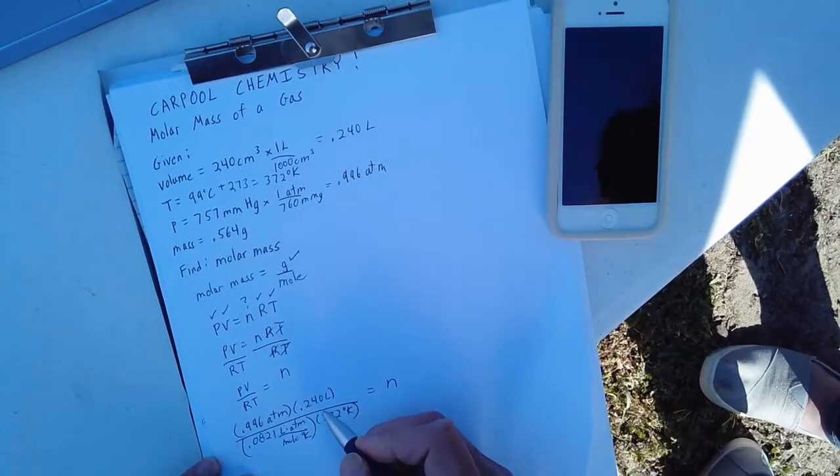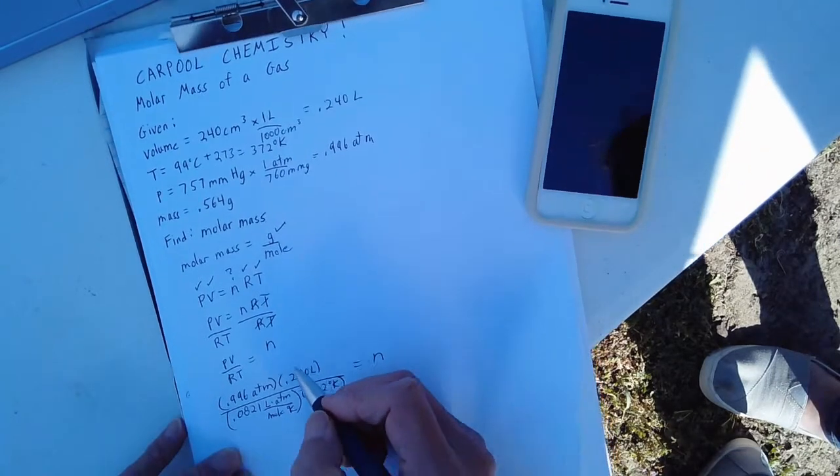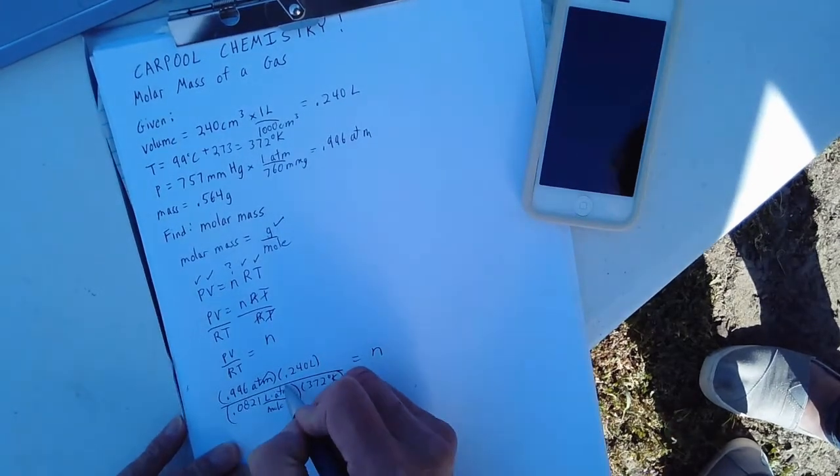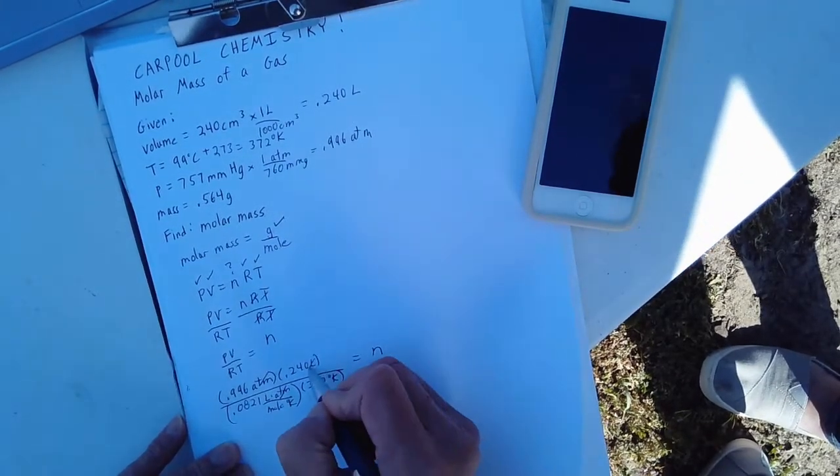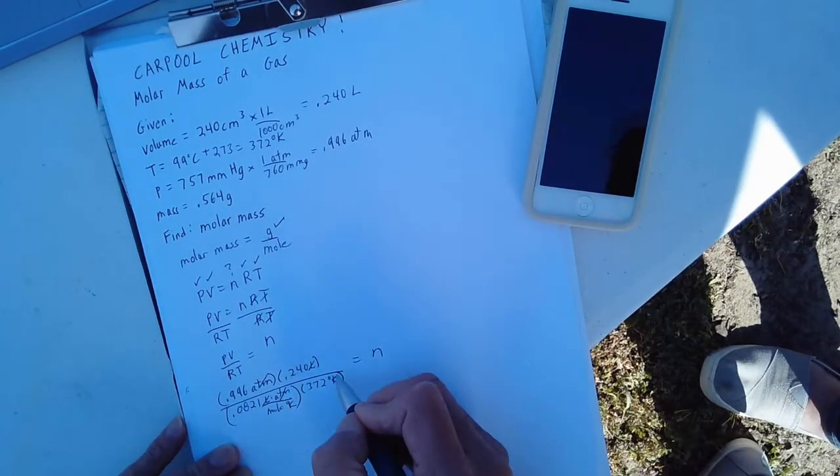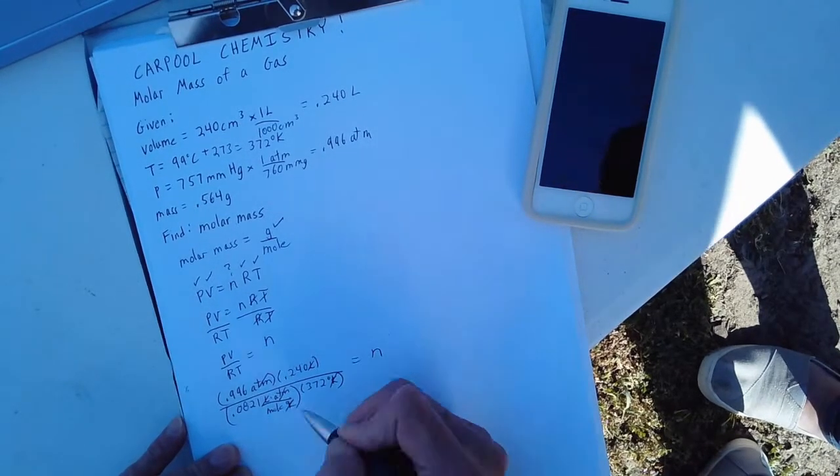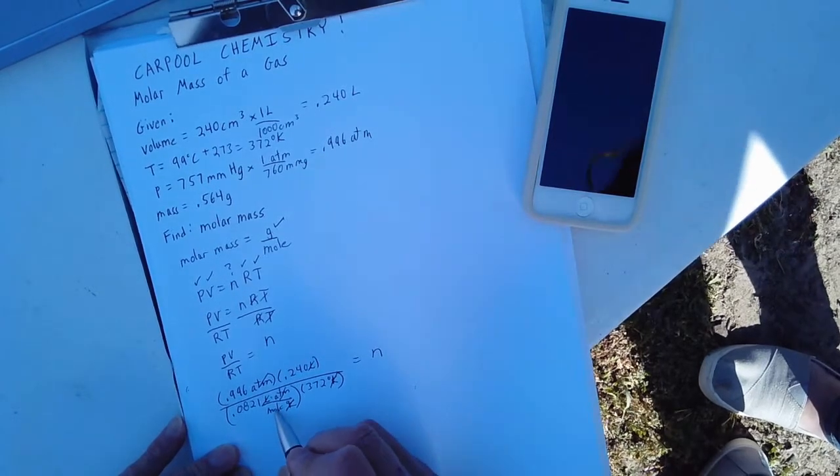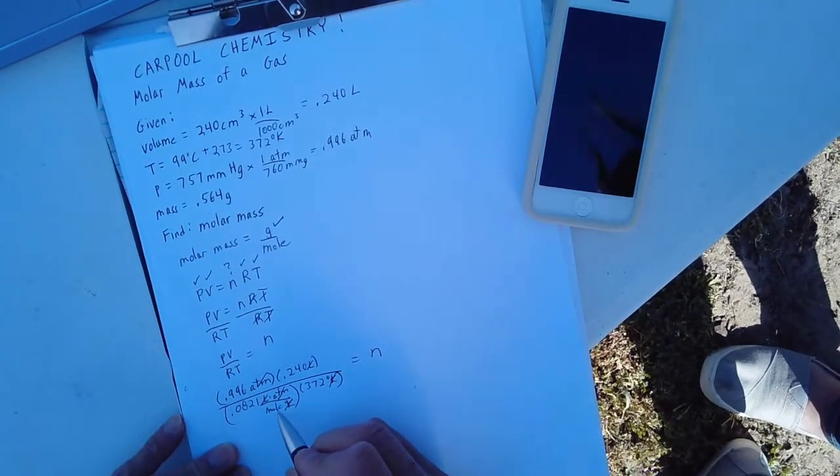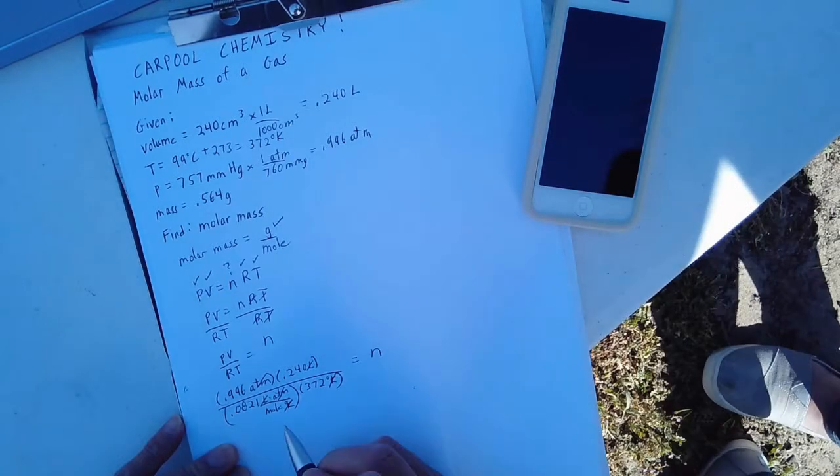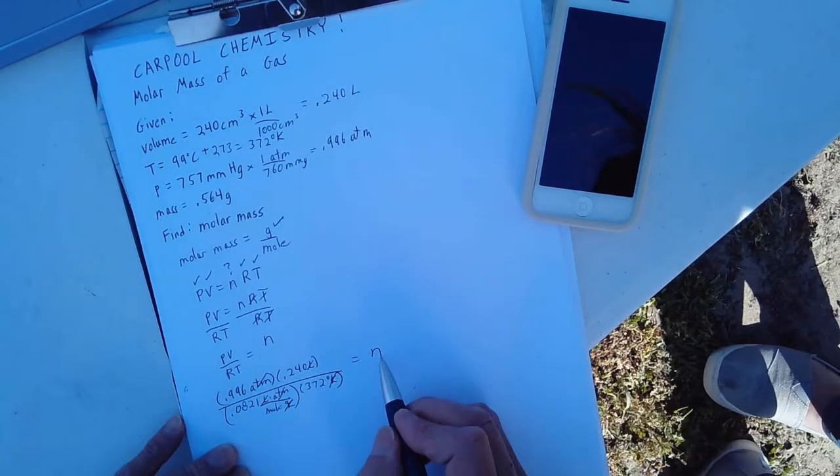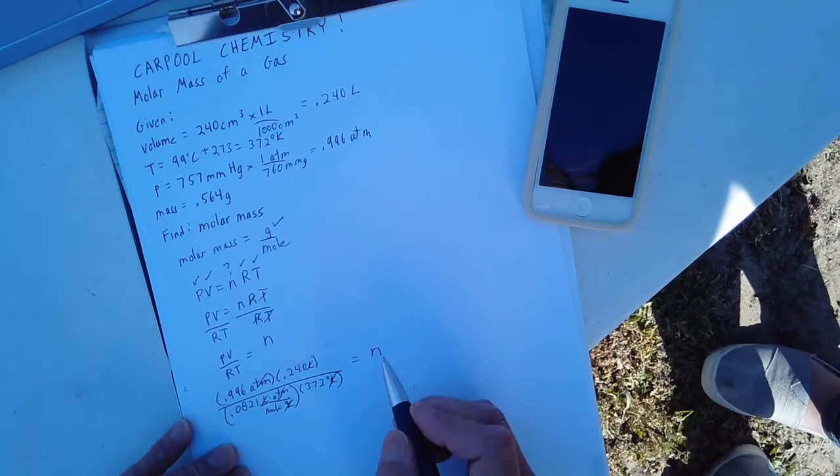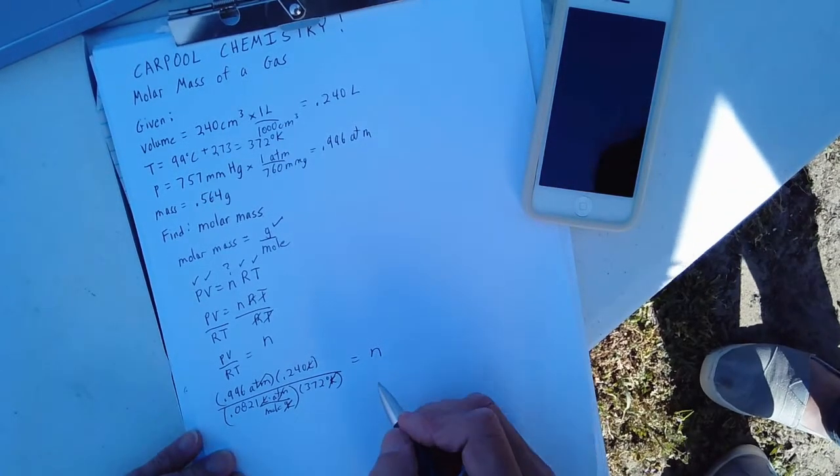Let's cancel out our units just to make sure we did this correctly. Atmospheres cancels out with atmospheres. Liters cancels out with liters. Degrees Kelvin cancels out with degrees Kelvin. The only unit we have left is moles, which is in the denominator of the denominator, which is really the numerator. And is moles a correct unit for n? It sure is. So there's a pretty good chance that we can do this correctly.